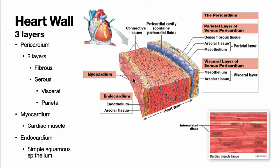Starting with the pericardium, which we've already been talking about, we can split it into two big layers: a fibrous layer on the outside, and then the serous layer, which will be closer to the myocardium. That serous layer can be divided into the visceral and parietal layer. Remember, the visceral layer is the layer that's closest to the viscera or organ, and the parietal layer is the one on the far side of the cavity or space.